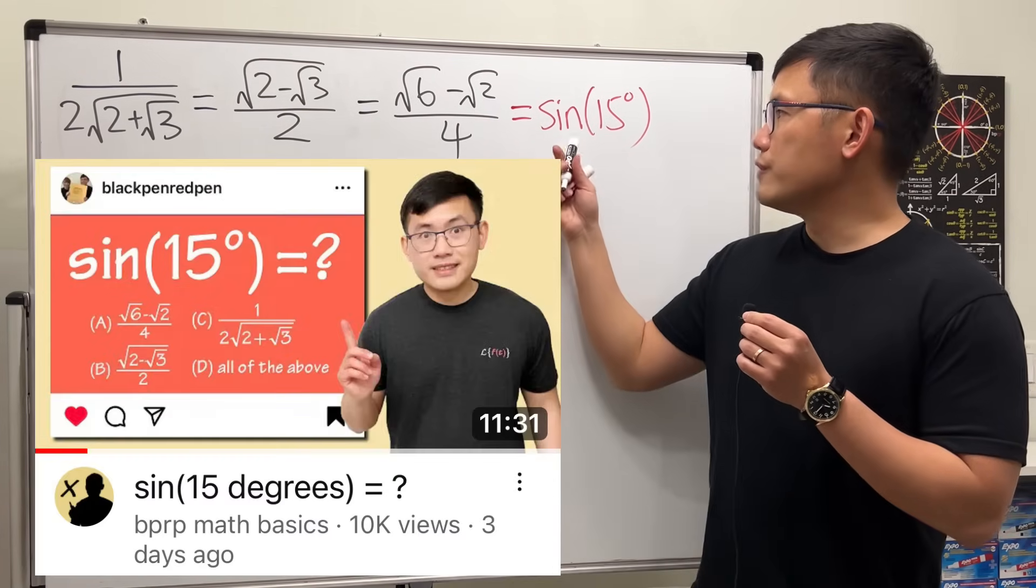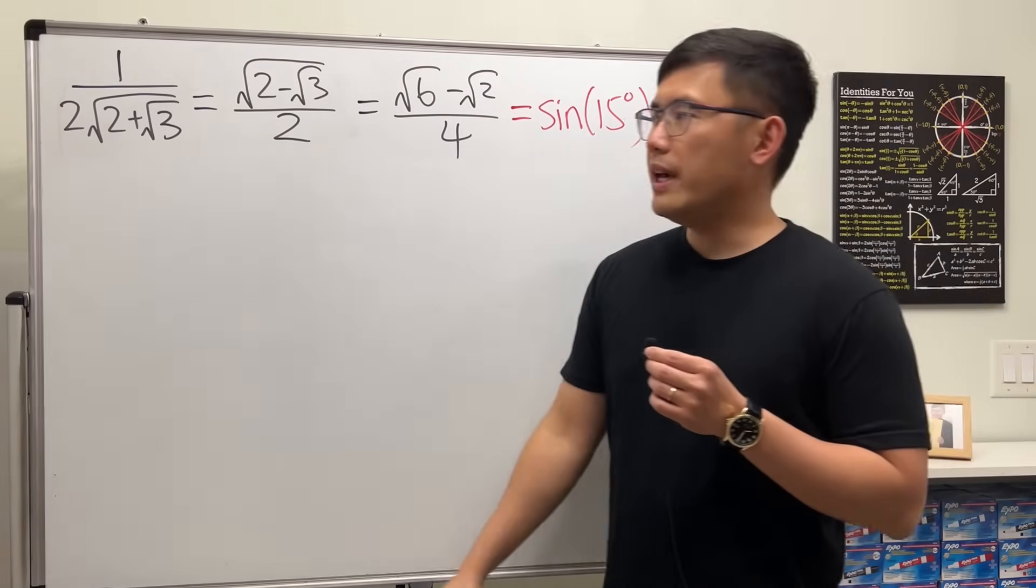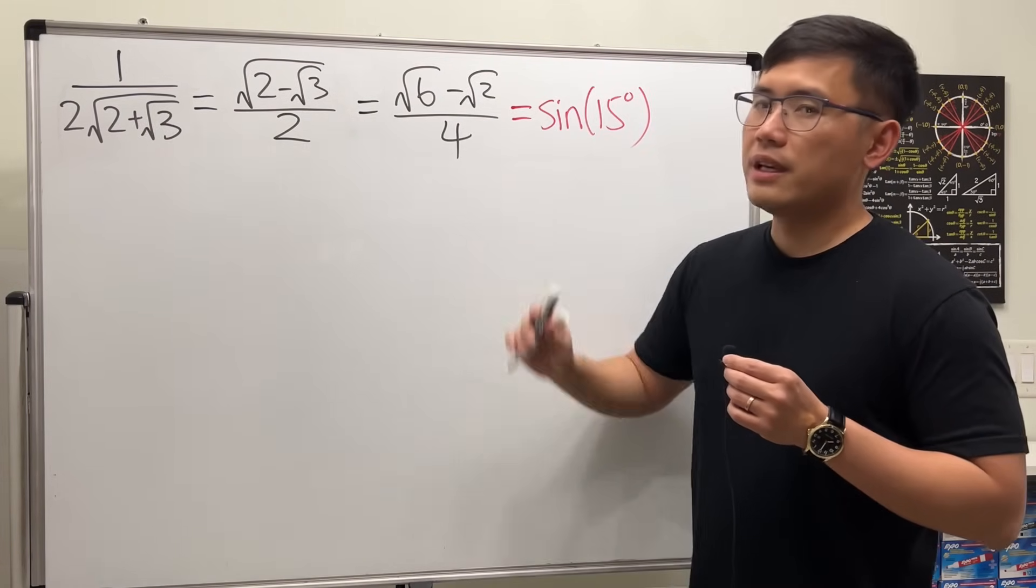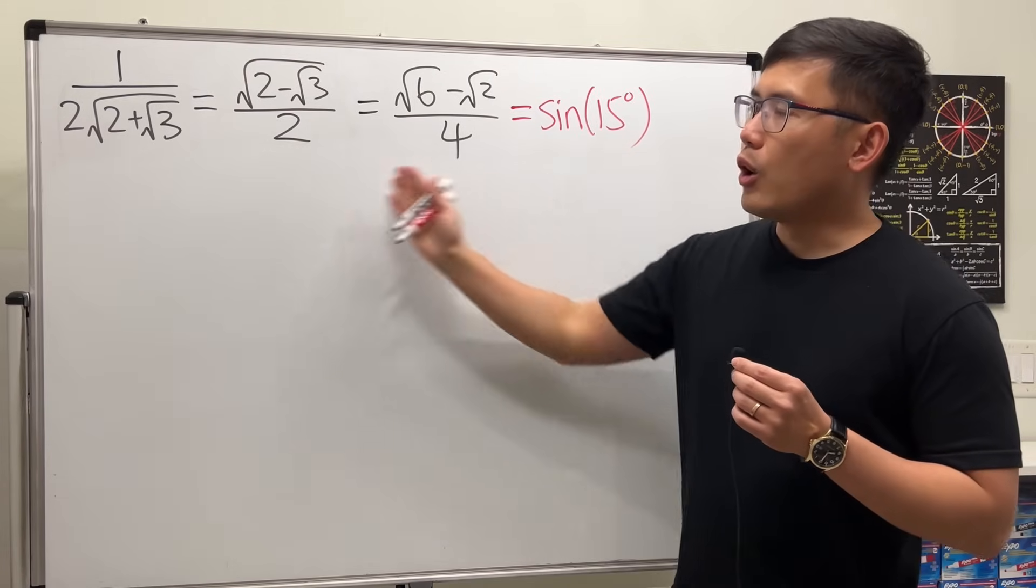Last time I showed you when we were trying to find sine of 15 degrees, we ended up with three different looking answers. Today, I will show you that they are all equal.